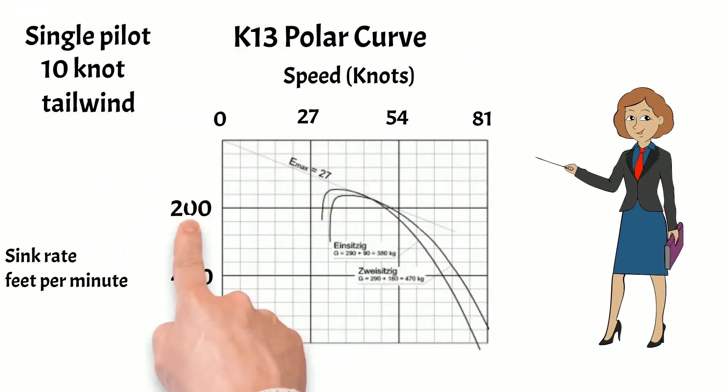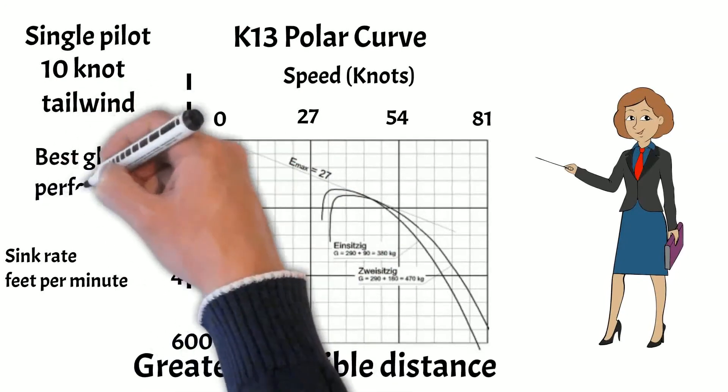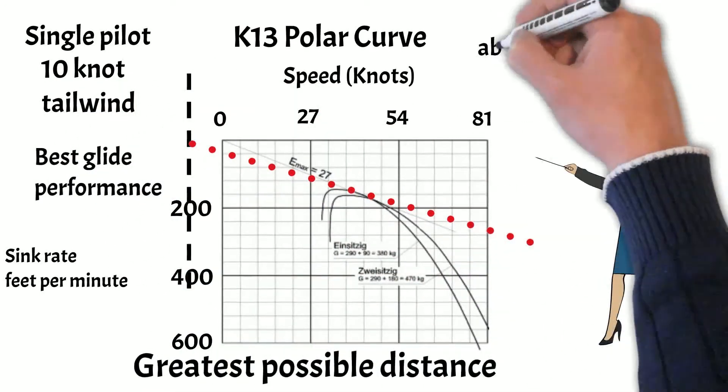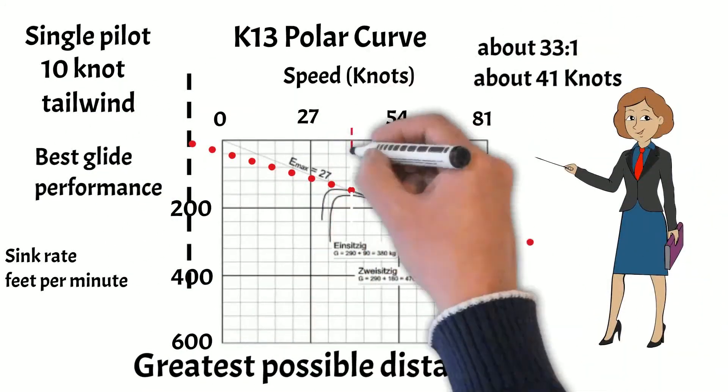However with a 10 knot tailwind, the best glide is here. About 33 to 1 at 41 knots.